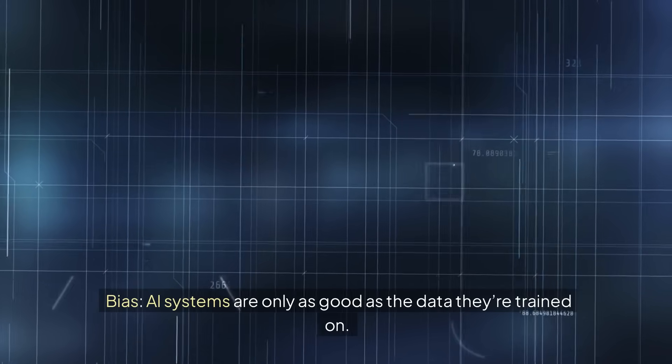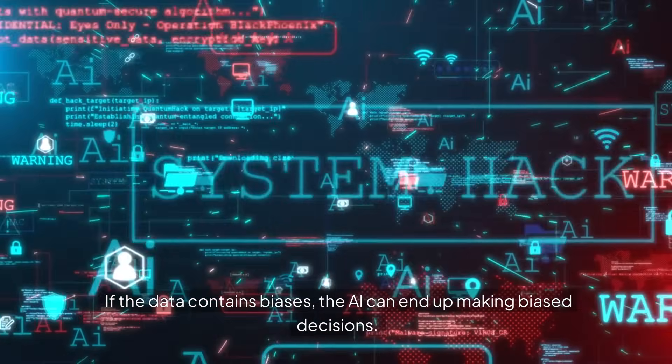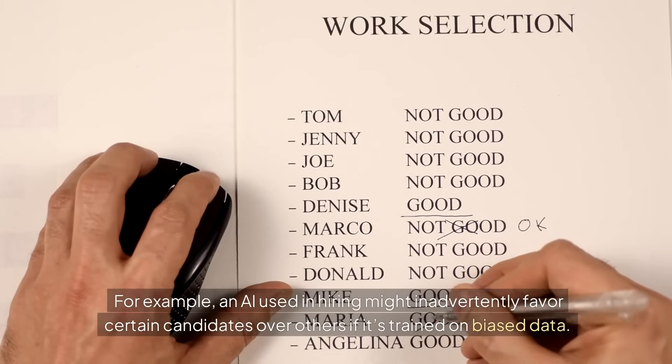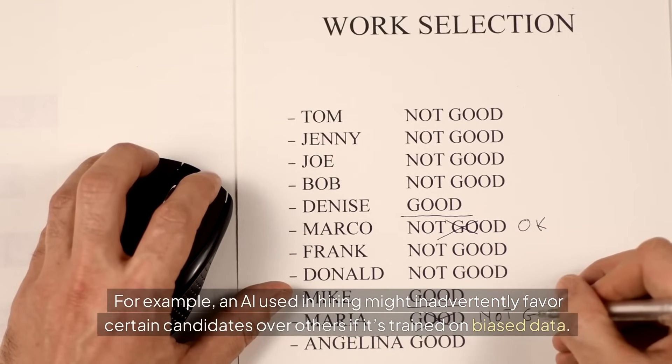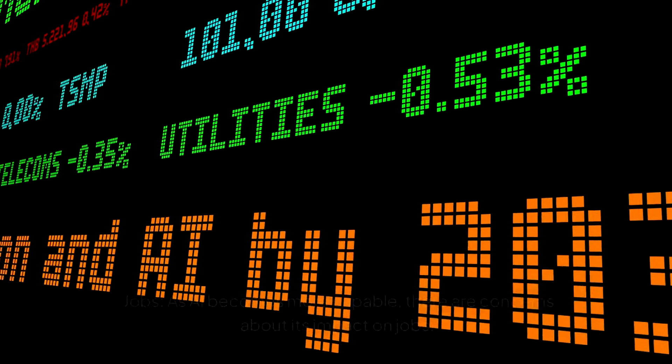Bias: AI systems are only as good as the data they're trained on. If the data contains biases, the AI can end up making biased decisions. For example, an AI used in hiring might inadvertently favor certain candidates over others if it's trained on biased data. Addressing these biases is crucial to ensure that AI systems are fair and just.